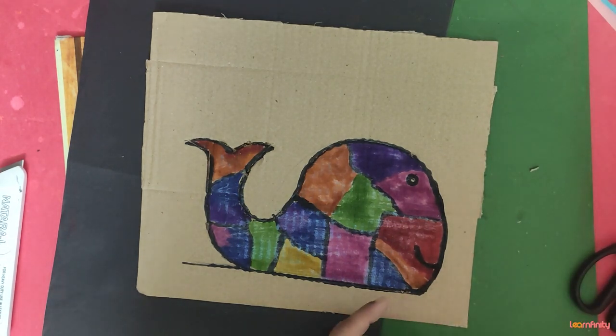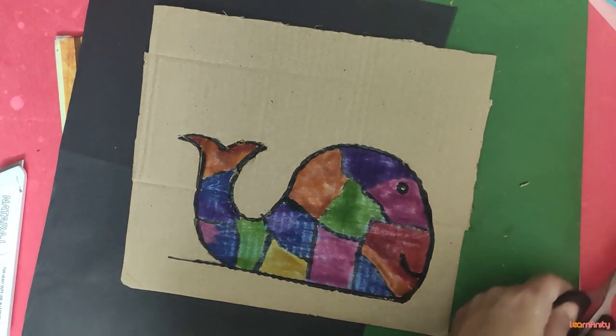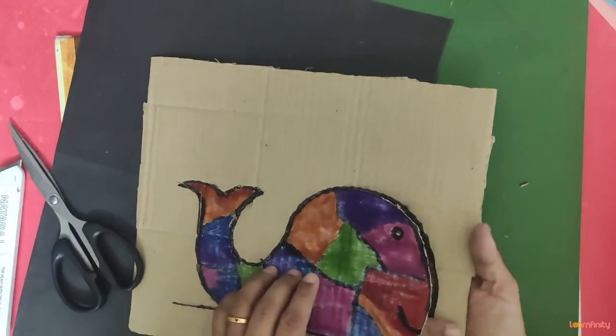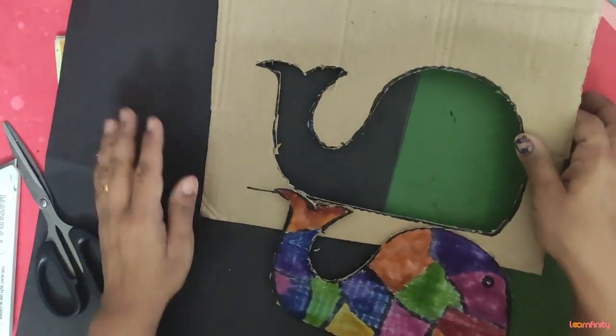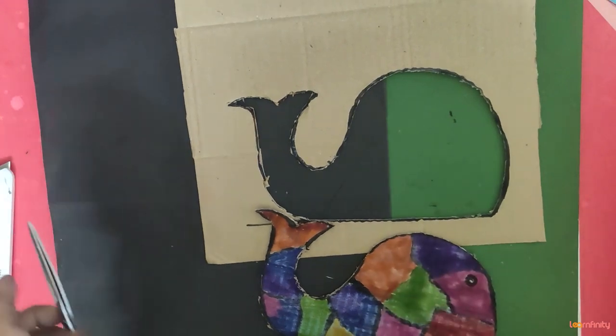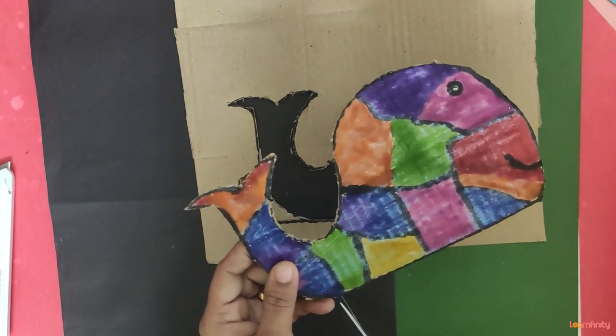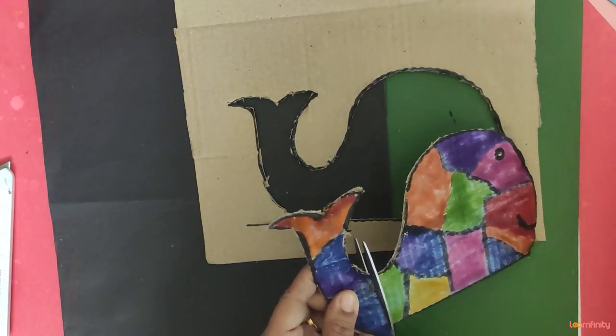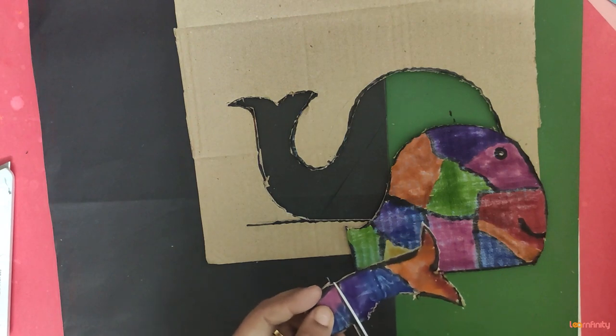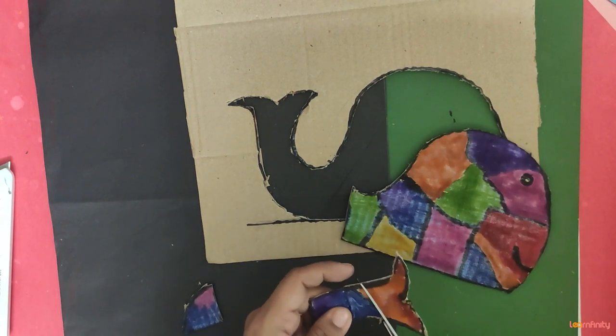Now what we are going to do, we will start. We just remove this, okay. And start cutting this in the direction whatever you have colored and marked the outline. Just cut it in that way. See, okay, cut it.